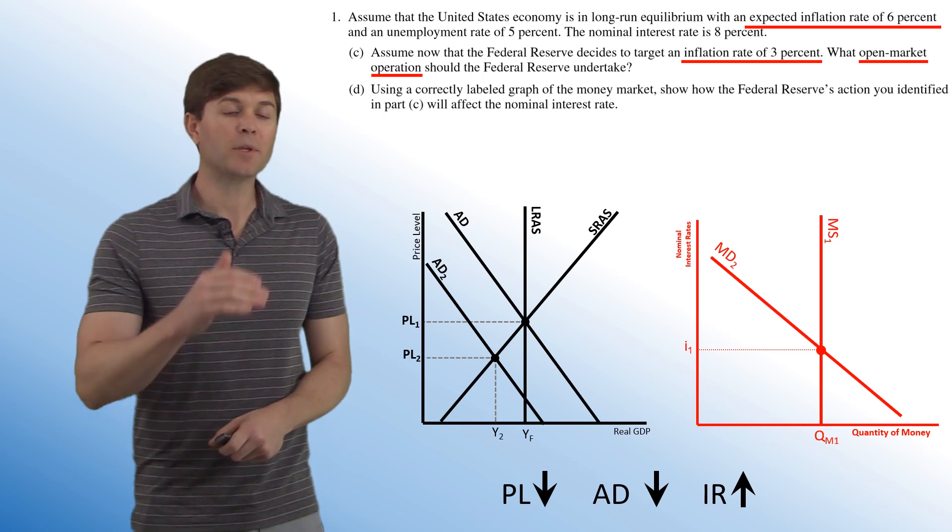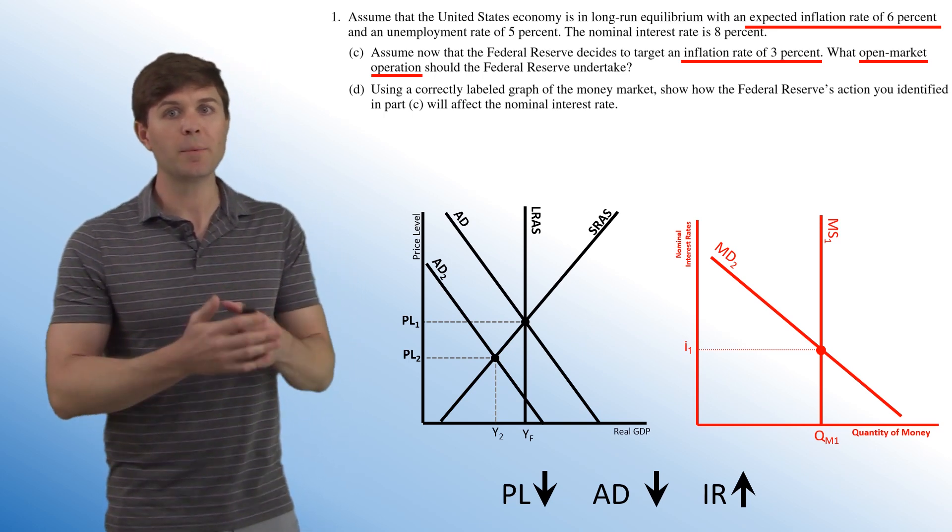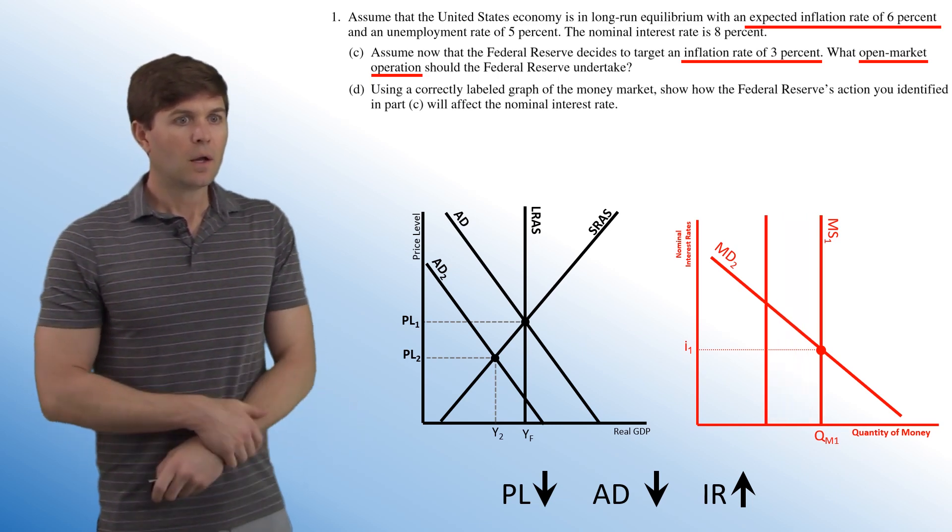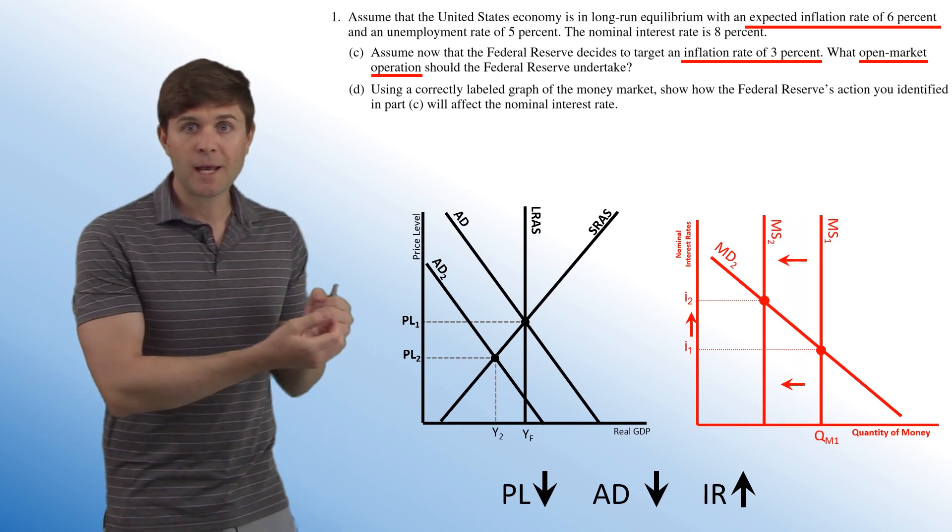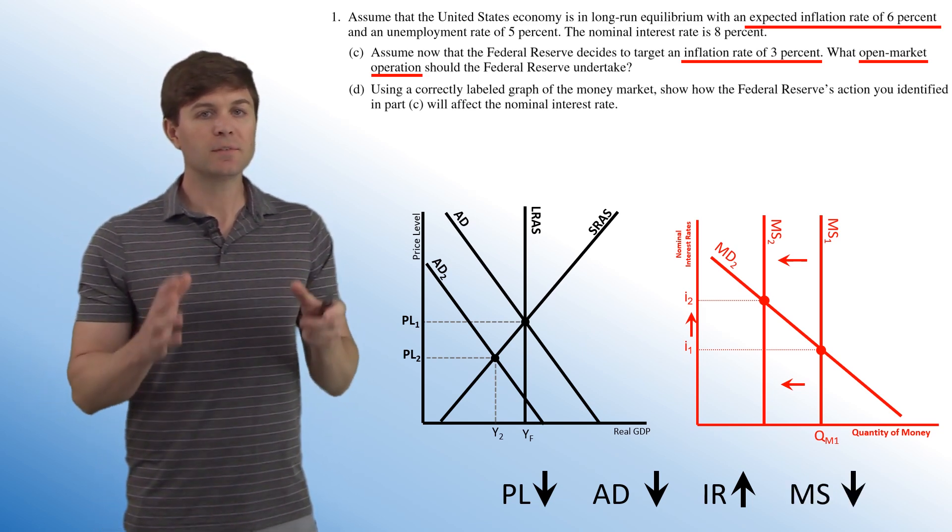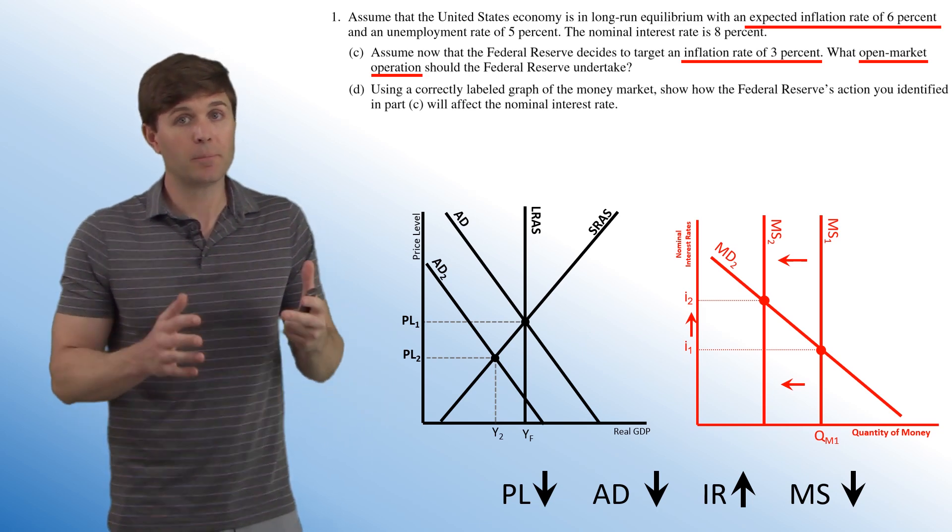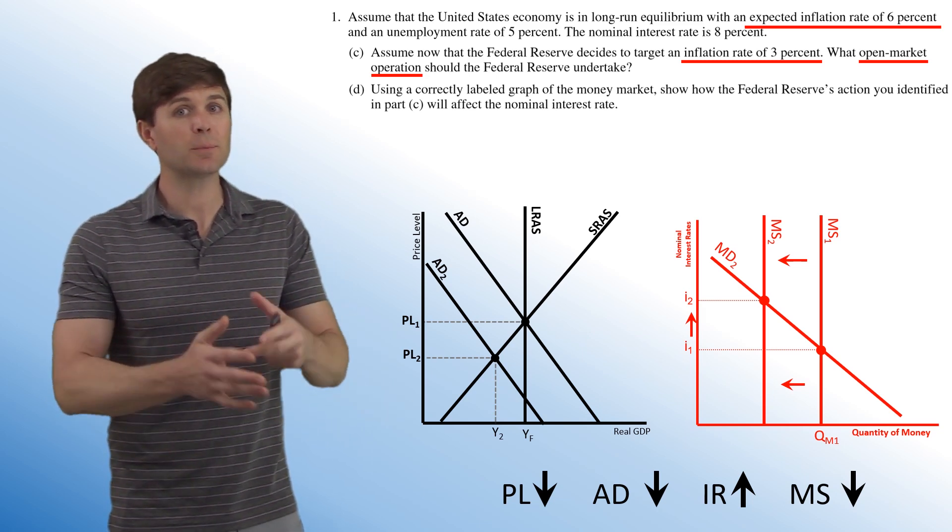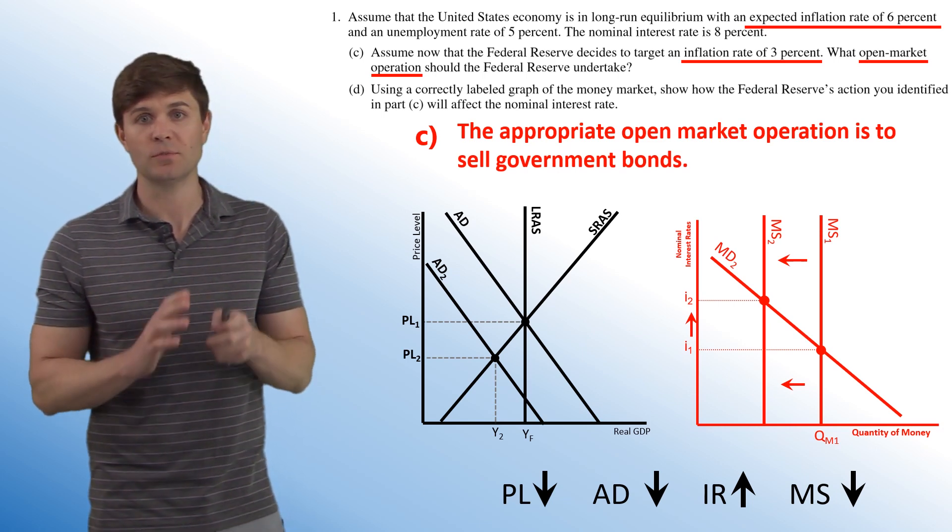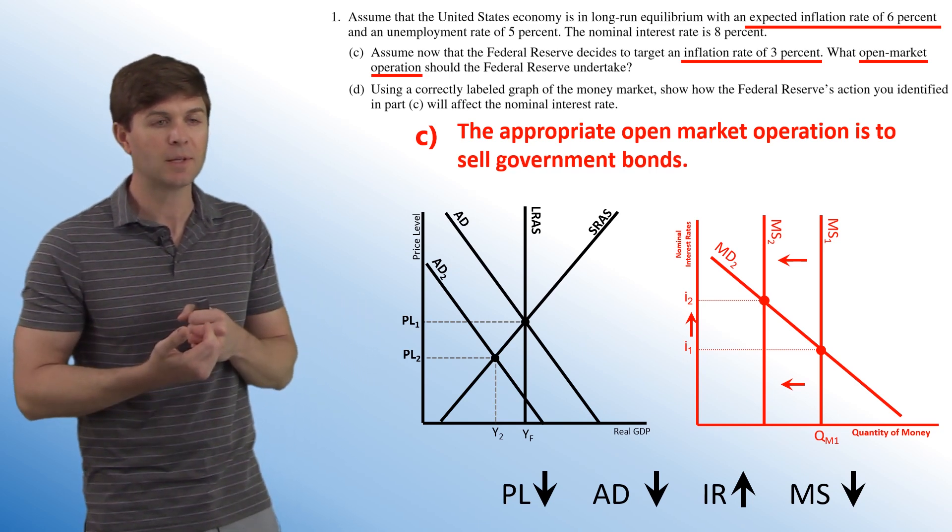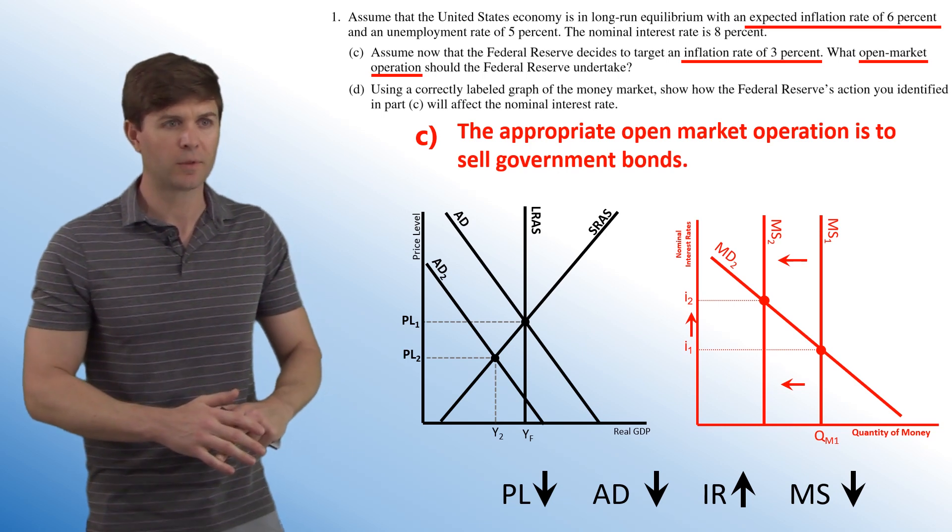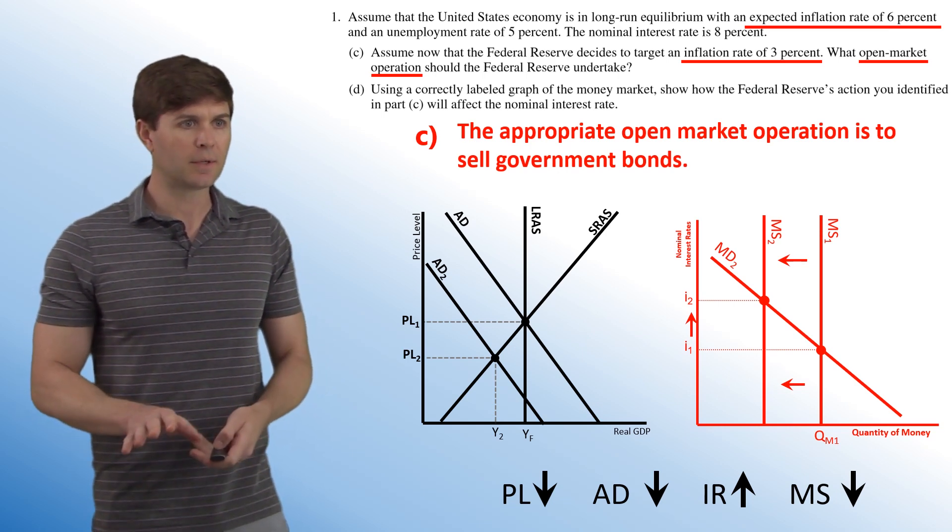We have our interest rate on the vertical axis, nominal interest rates. We've got our quantity of money on the horizontal axis. We've got our vertical money supply curve, our downward sloping money demand curve. So we want interest rates to go up. In order to get aggregate demand to go down, interest rates need to go up, and that would curb interest-sensitive consumption and investment spending. So what we need is our money supply to shift to the left. What open market operation will get us to that point? In this case, we're either talking about buying or selling bonds. Buying bonds would actually increase the money supply, so we're going to want to go with selling bonds. The appropriate open market operation is to sell government bonds. That would bring that money supply to the left, bring up the interest rates, bring down aggregate demand and also bring down the price level with it.